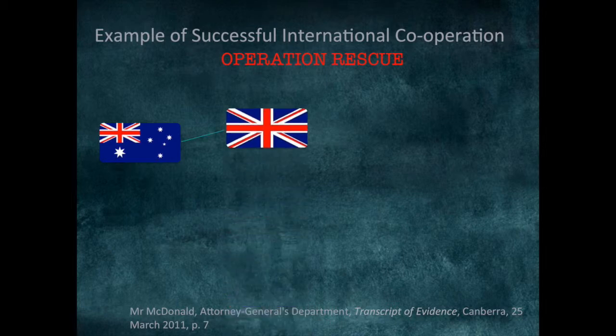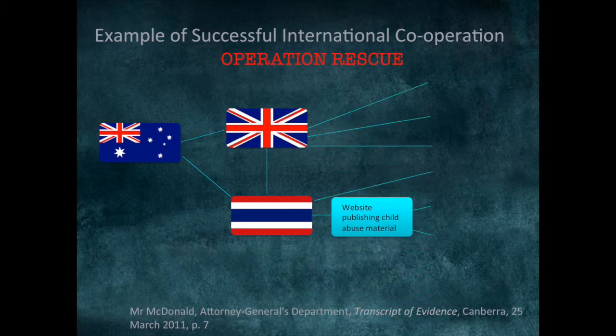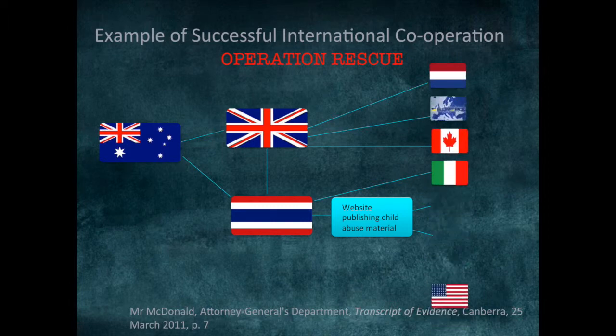In response, the Federal Police and British Police formed a joint investigation which involved sharing intelligence with police in Thailand and the discovery of a website publishing child abuse material. It then led to other countries: the Netherlands, the involvement of Europol, Canada, Italy, the United States, New Zealand, and people who were arrested in Chile, Brazil and France. The Convention on Cybercrime aims to achieve the harmonisation of national laws and enhance international cooperation when dealing with this global problem.